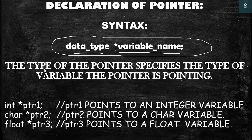The type of the pointer specifies the type of the variable the pointer is pointing to. An integer pointer will point to an integer variable, and a float pointer will point to a float variable. Here are some examples.